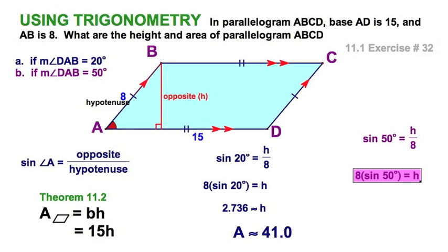Sine of 50 is h over 8. 8 times the sine of 50. Now you know how to do the calculator work - I would leave those numbers in the register. But you can see this number is more than twice as big, and I get an area that's about 91.9 square units.